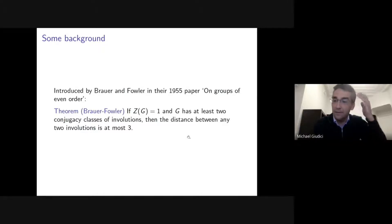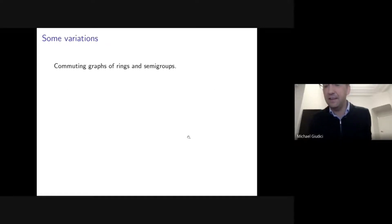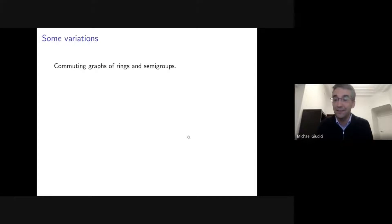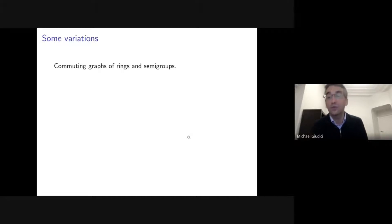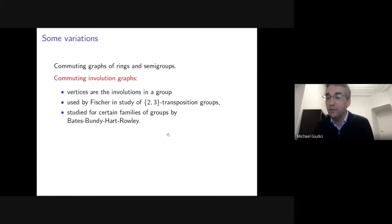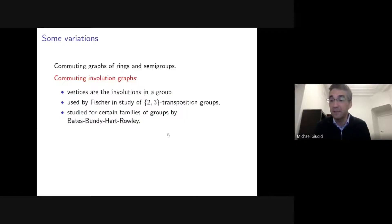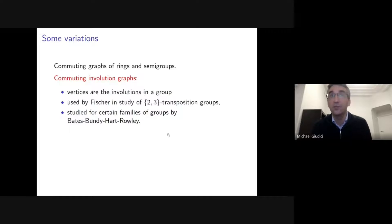Since then, commuting graphs have received a lot of attention with several variations. The notion of two elements commuting is not restricted to groups, and some people have studied commuting graphs of rings or semigroups. One generalization is to restrict to a nice subset of elements rather than all non-central elements. One particular instance is commuting involution graphs, where the vertices are all the involutions in the group.